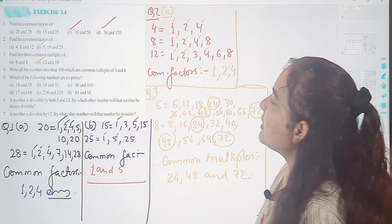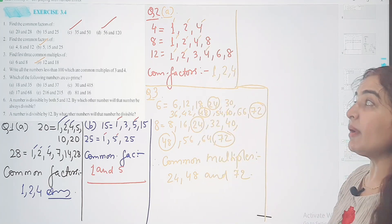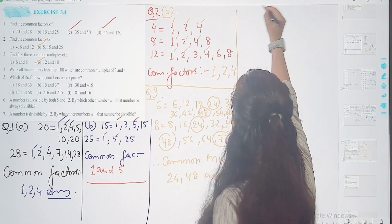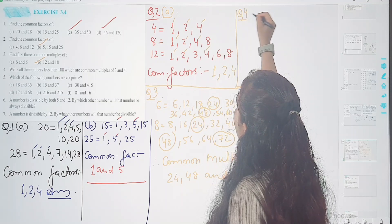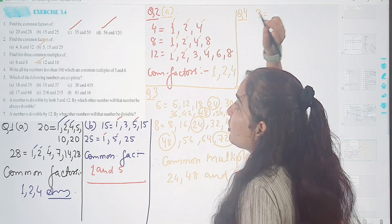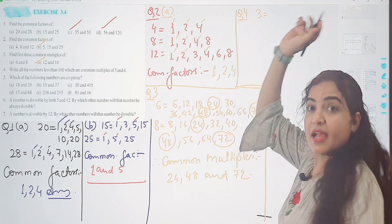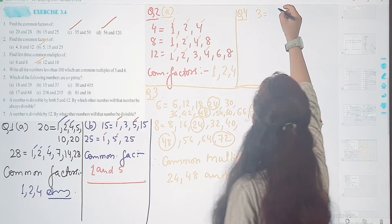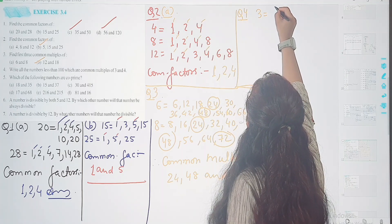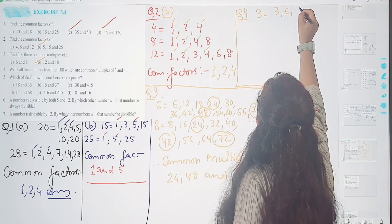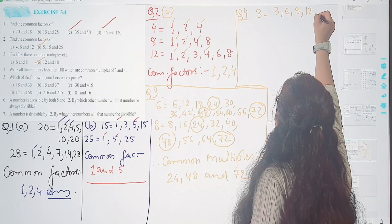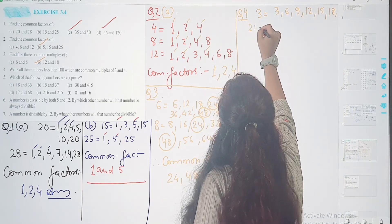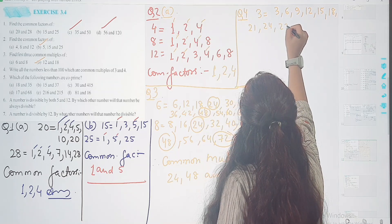Next is write all the numbers less than 100 which are common multiples of 3 and 4. Toh chalhi likhte hai question number 4. 3 ka all common multiples. Humko jana ka hai 3, 99 tak jana padhega. Toh chalhi dekhi common multiples ka kya dekhte hai? 3, 6, 9, 12, 15, 18. Let me write 3 ka table.